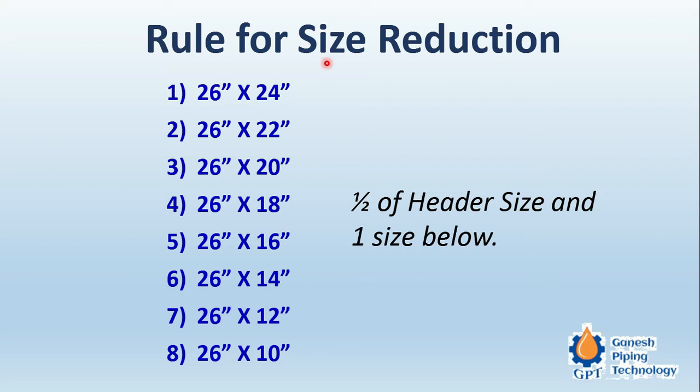This is a very important rule. Many of you may be learning this for the first time, so please note it — it is very important as far as construction and design are concerned. Also note that this rule is applicable for reducing tees as well. For example, if you have a header size of 26 inches, the minimum branch size for a standard reducing tee that will be available is 10 inches.